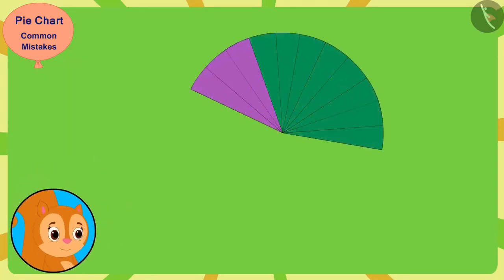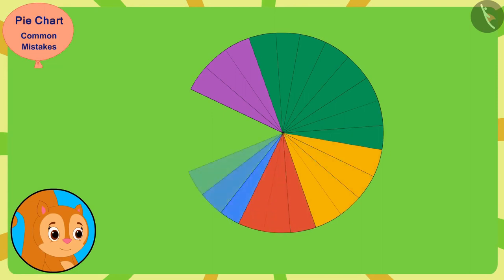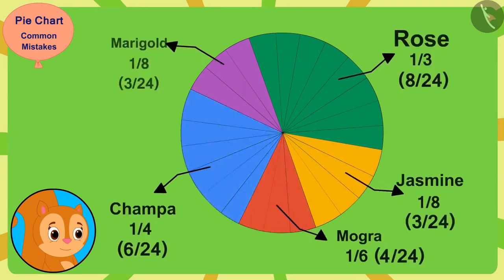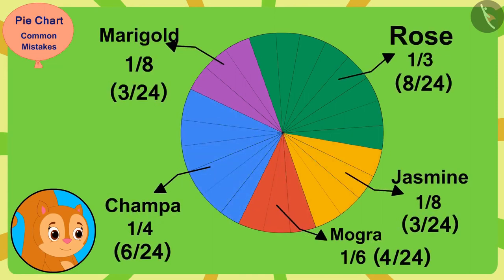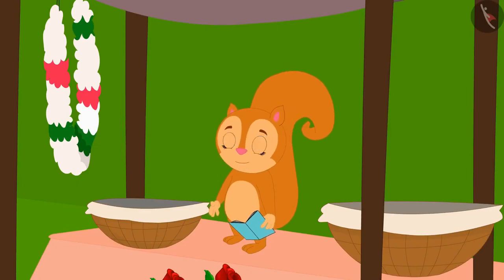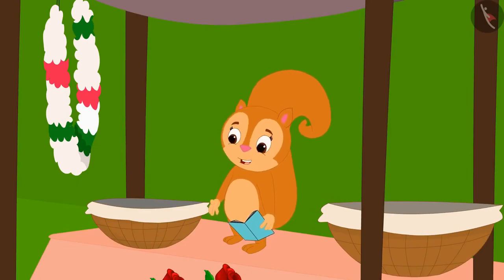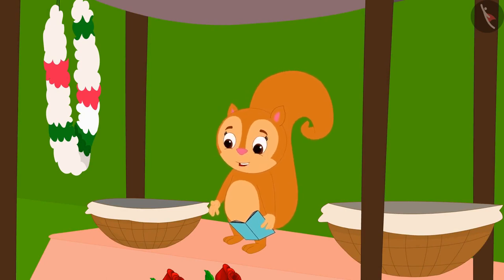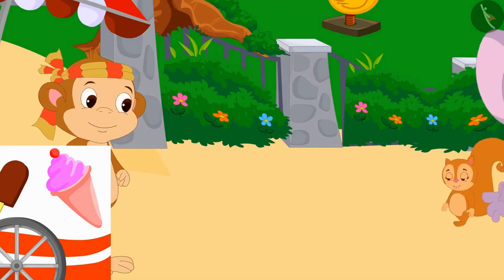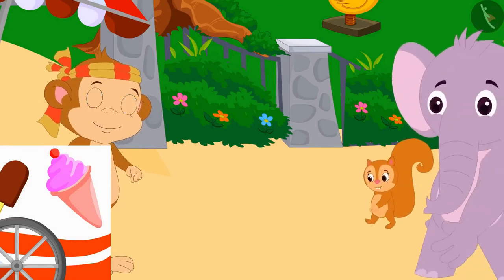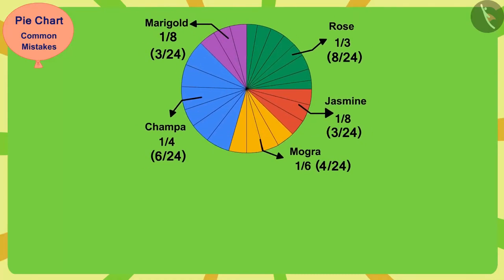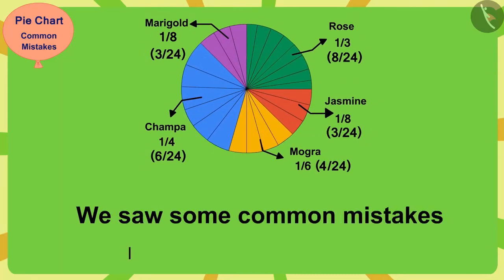Chanda divided the pie chart into equal parts and made it without any mistake. Thank you, Appu. Now I will never repeat this mistake. For this help, allow me to buy an ice cream for you from Babban's ice cream stall. Both Chanda and Appu went to eat ice cream. Children, in this video we saw some common mistakes related to the pie chart.